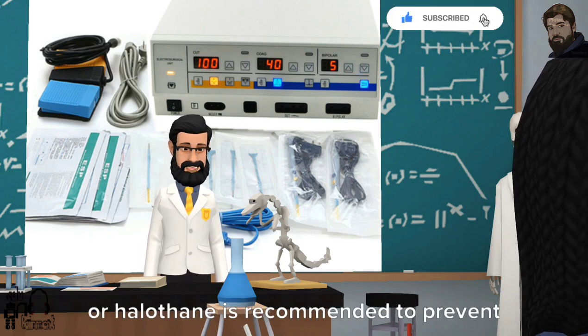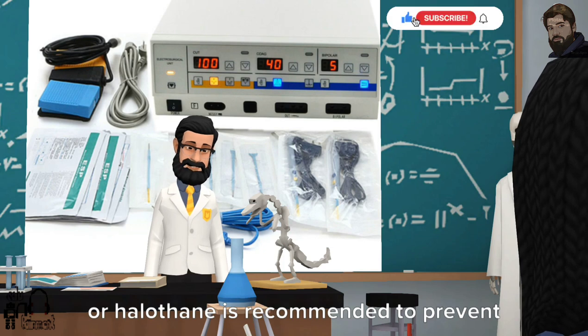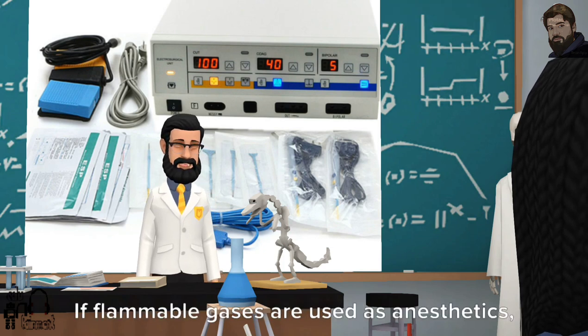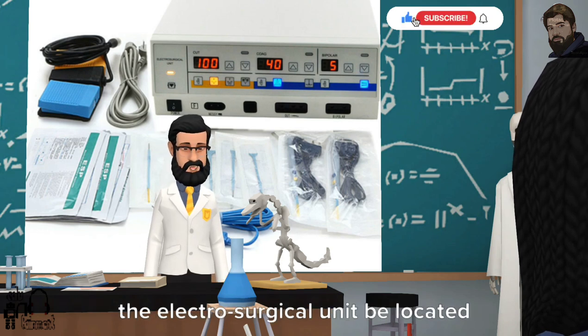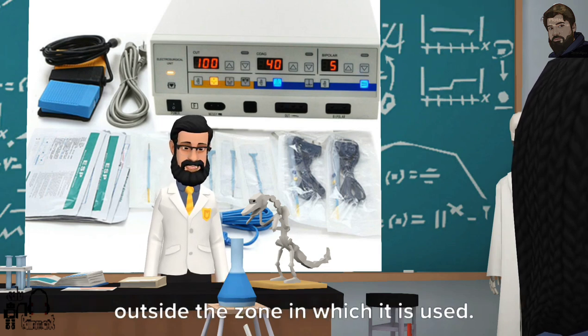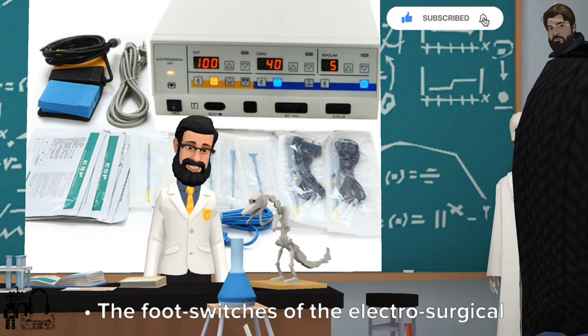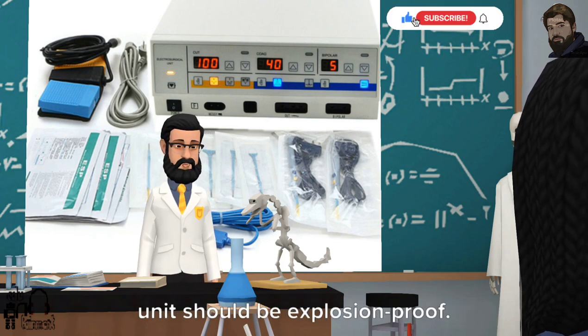The use of non-explosive anesthetics such as nitrous oxide, fluorothane, or halothane is recommended to prevent sparks. If flammable gases are used as anesthetics, the electrosurgical unit should be located outside the zone in which it is used.